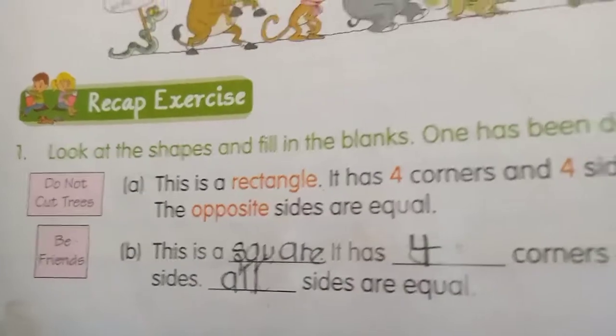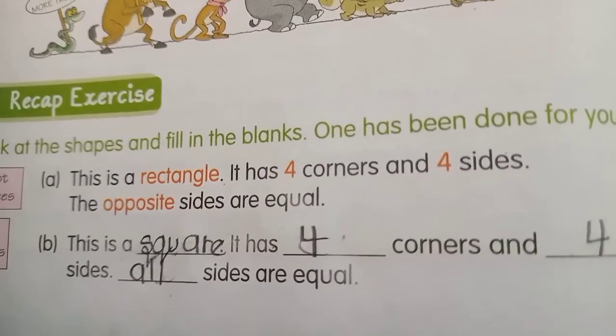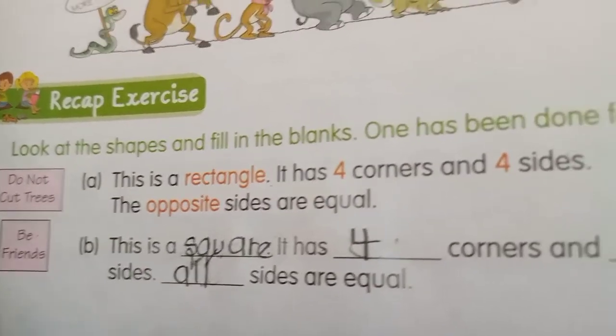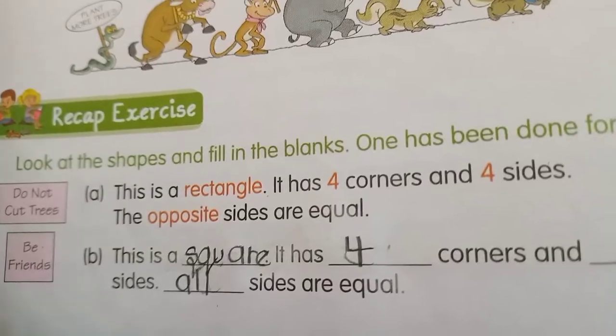B. This is a dash. It has dash corners and dash sides. Dash sides are equal. So this is a square. It has 4 corners and 4 sides. All sides are equal.